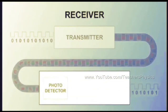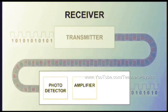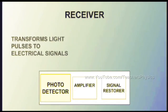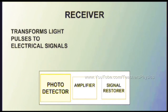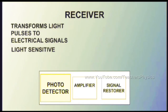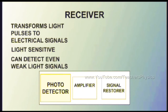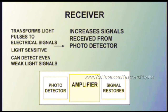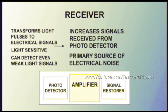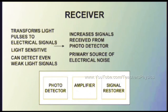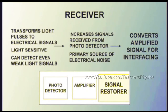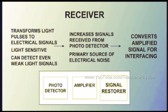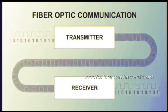The pulses of light are sent through the transparent core of the cable. The receiver consists of a photodetector, an amplifier, and a signal restorer. The photodetector transforms light pulses into electrical signals; it is light-sensitive and must be capable of detecting even weak light pulses. The amplifier increases the signals received from the photodetector and is the primary source of electrical noise in the receiver. The signal restorer converts the amplified electrical signal into a form suitable for the interfacing circuitry.